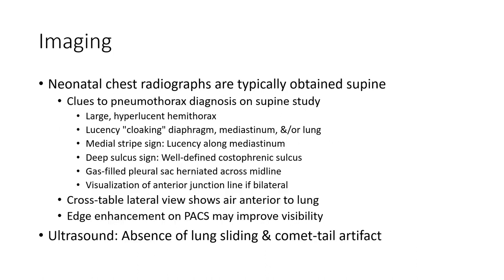Imaging: neonatal chest radiograph — a chain of supply. Clues to pneumothorax diagnosis on a supine radiograph include: large area of lucency, curvilinear lucency along the gastrointestinal tract, deep sulcus sign, and well-defined mediastinal border.